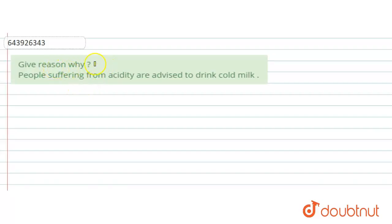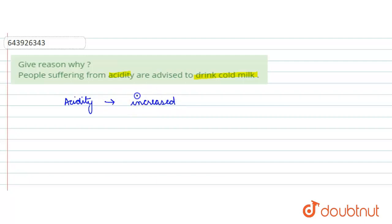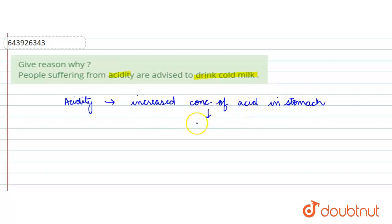The question says: give a reason why people suffering from acidity are advised to drink cold milk. Acidity is generally the increased concentration of acid in the stomach, which causes irritation. Since the concentration of acid is increased in our stomach,